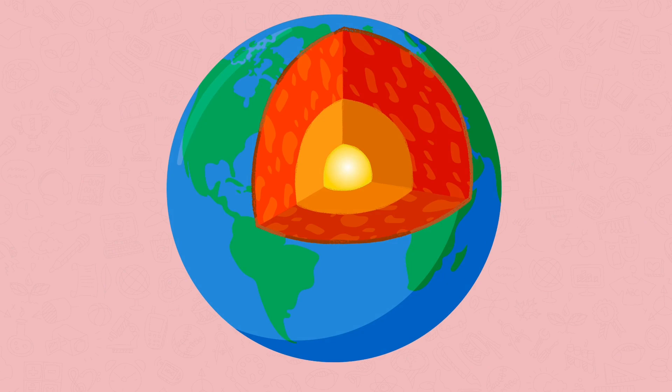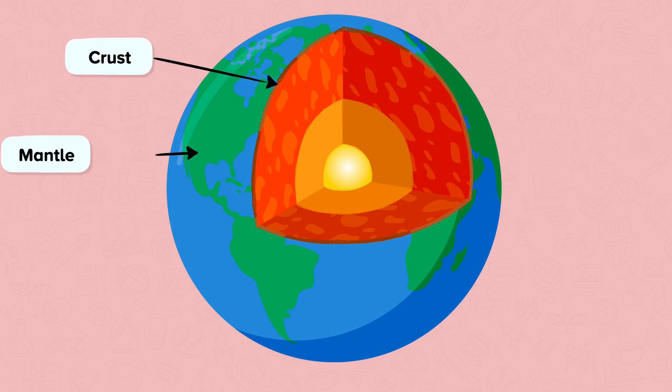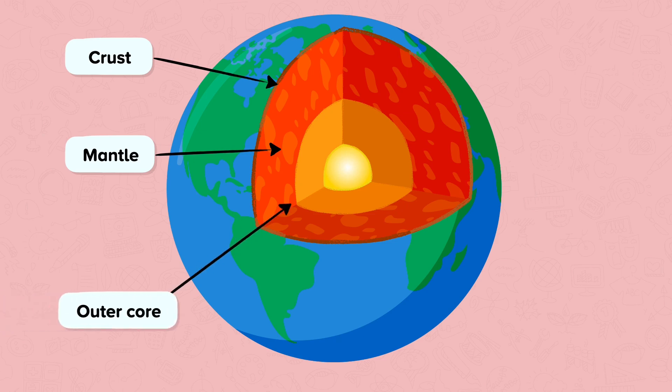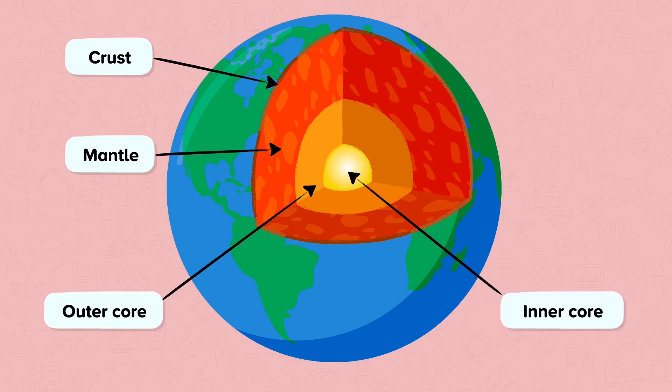The Earth is made up of layers: the crust, the mantle, the outer core, and the inner core.